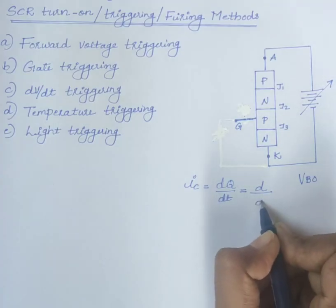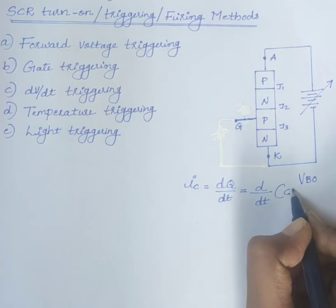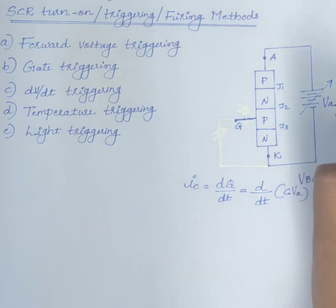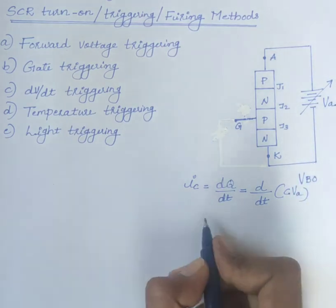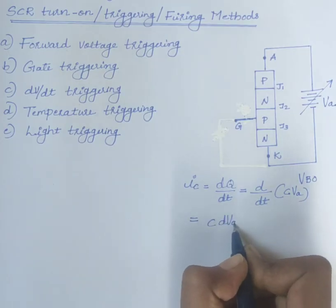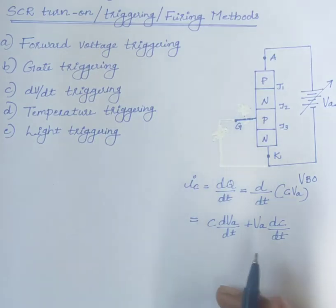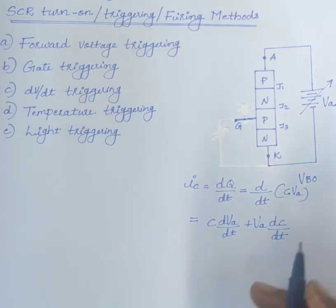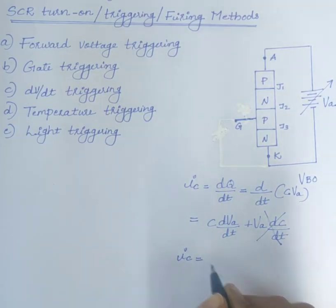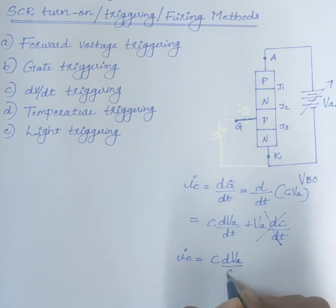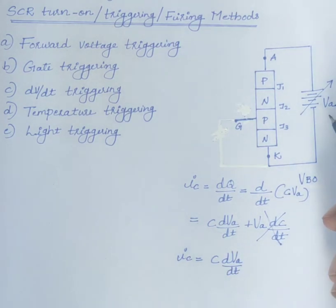We know that Q is equal to CV. Therefore, D by DT of capacitance value C into applied voltage VA, which is equal to C into DVA by DT plus VA into DC by DT. As the junction capacitance is almost constant, DC by DT is zero. Therefore, IC equals C into DVA by DT, where VA is the applied voltage.